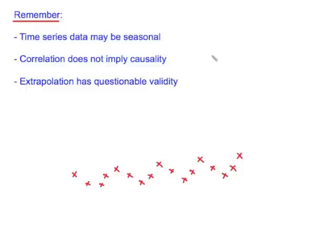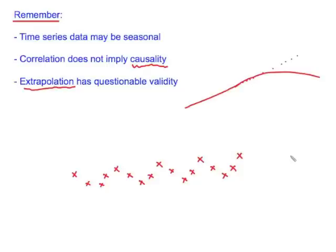Correlation or an association between two variables does not imply causality. And thirdly, extrapolation has questionable validity. Just because we have a linear trend so far does not mean that that linear trend will continue — it may start to decrease, it may start to increase exponentially. And the further away from the original data that we make a prediction, the less valid our prediction is likely to be.